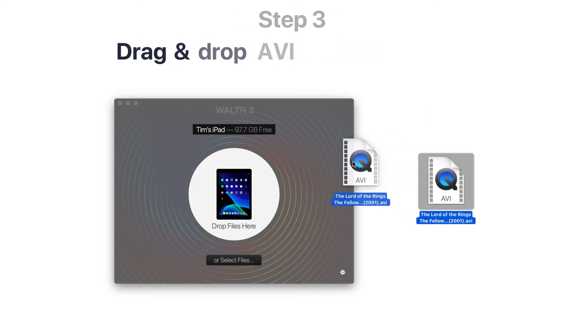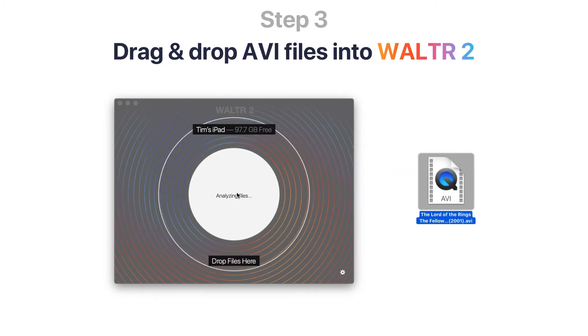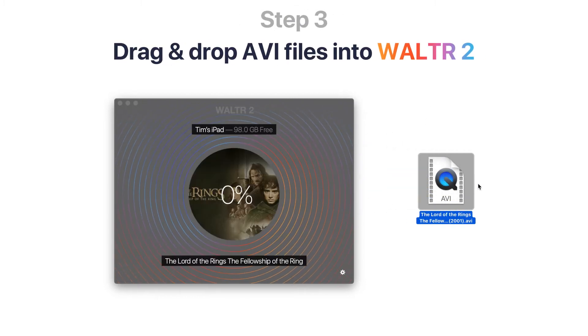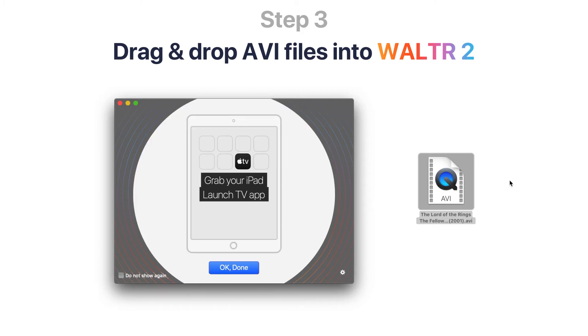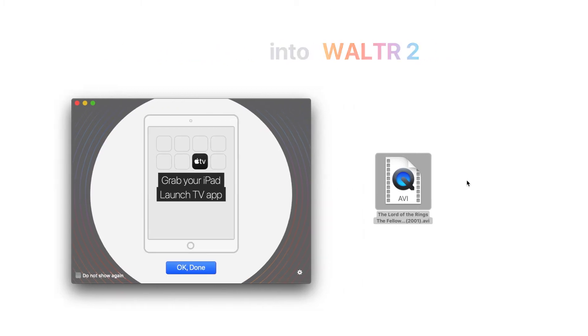Finally, drag and drop your AVI video into the drop zone. Wait until the video is converted and transferred on the fly, and voila — the AVI file will transfer into your pre-installed TV app on the iPad.